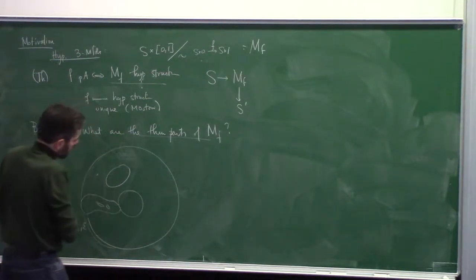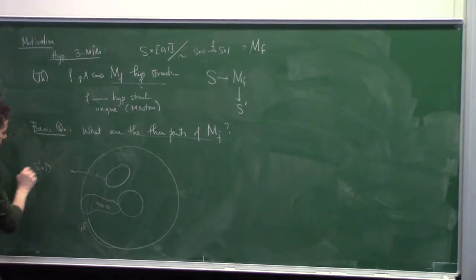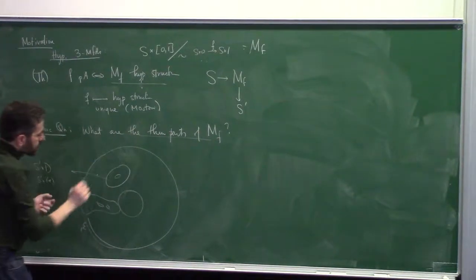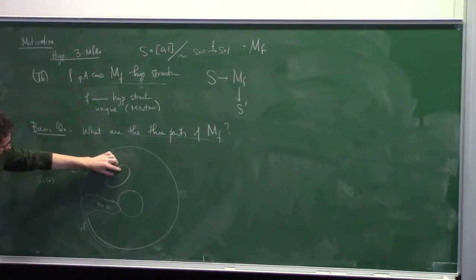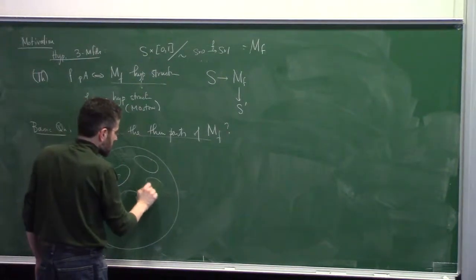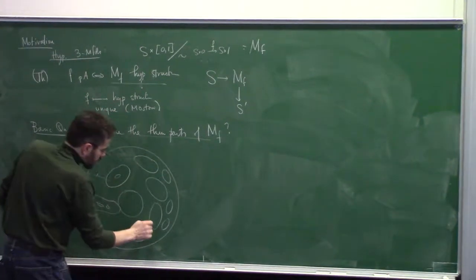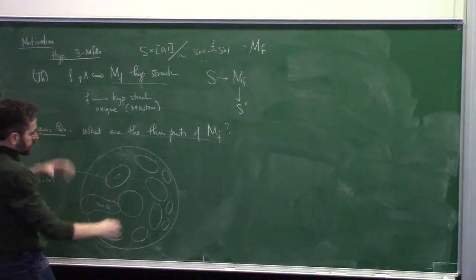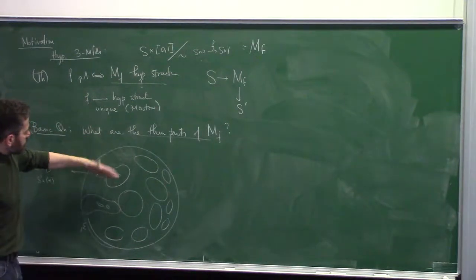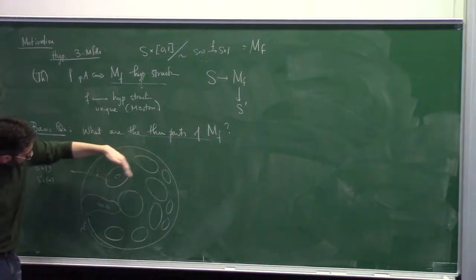Every component of the thin part of the three-manifold is a solid torus - a circle cross a disc. The core circle is an element of the fundamental group, and in fact it's homotopic to a simple curve on the surface. There's some pattern of these - they're all joined just like they are in two dimensions, but they live here in some pattern.